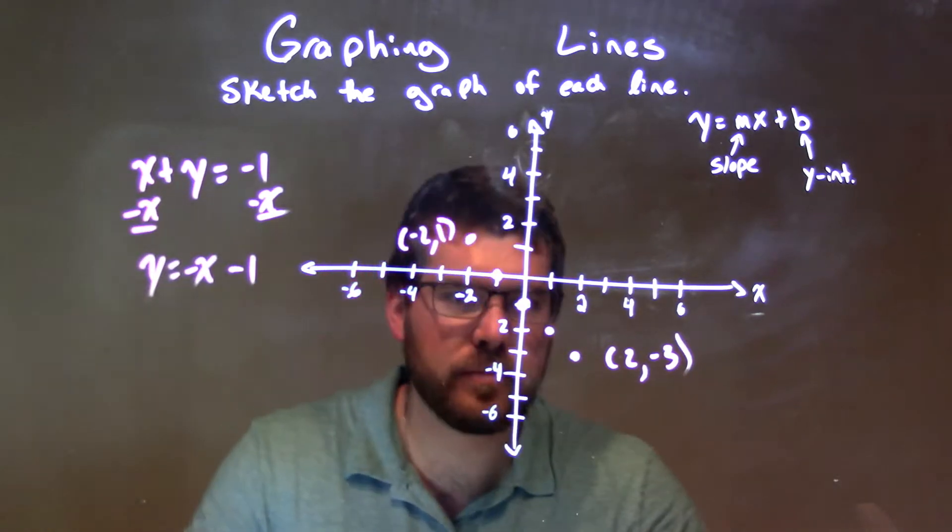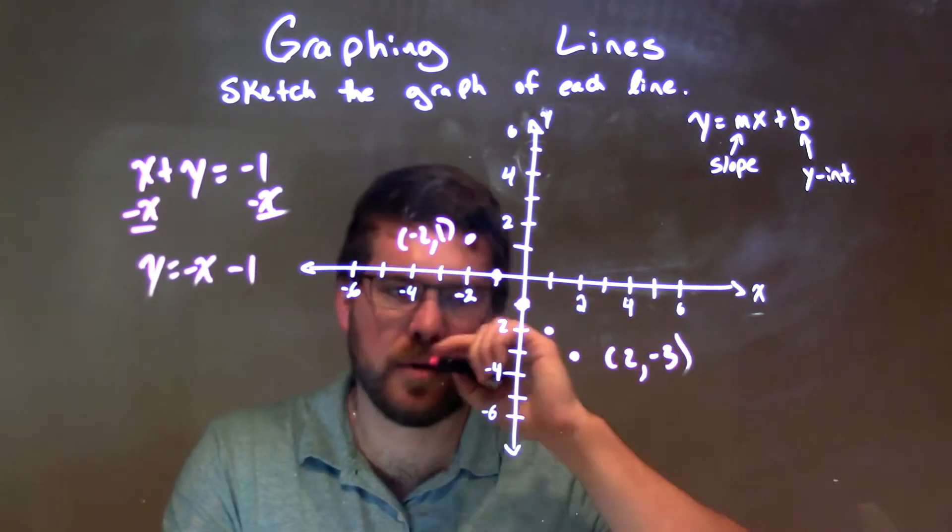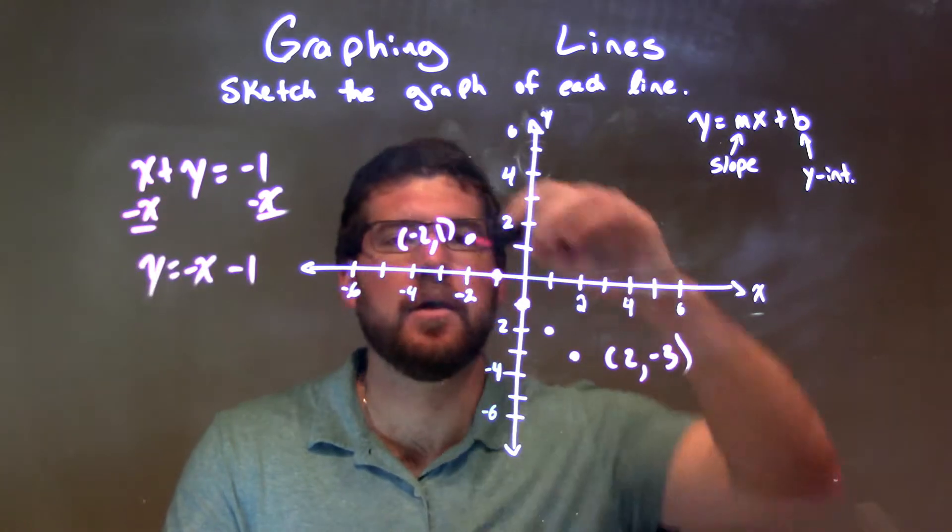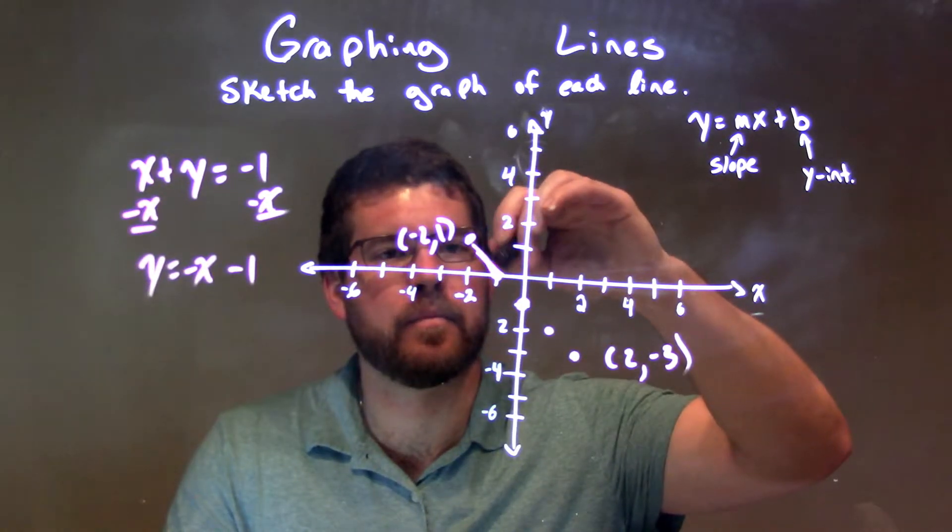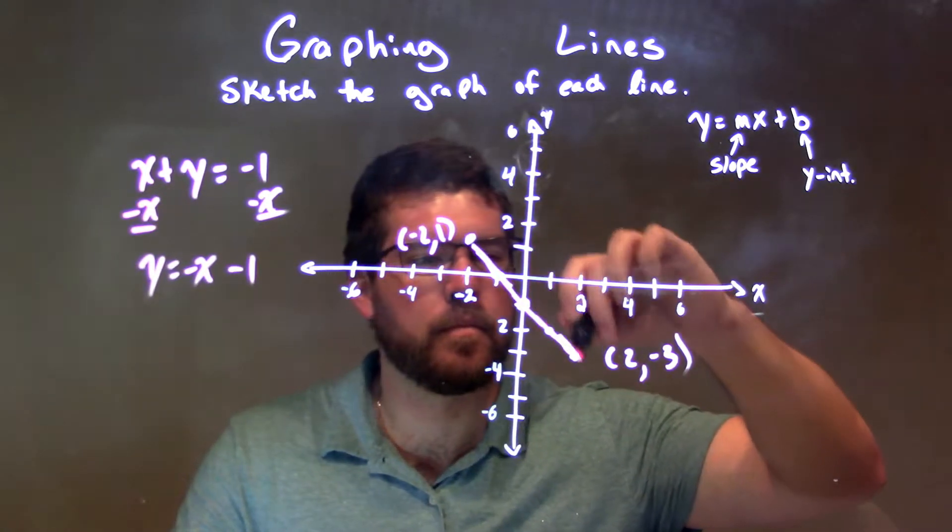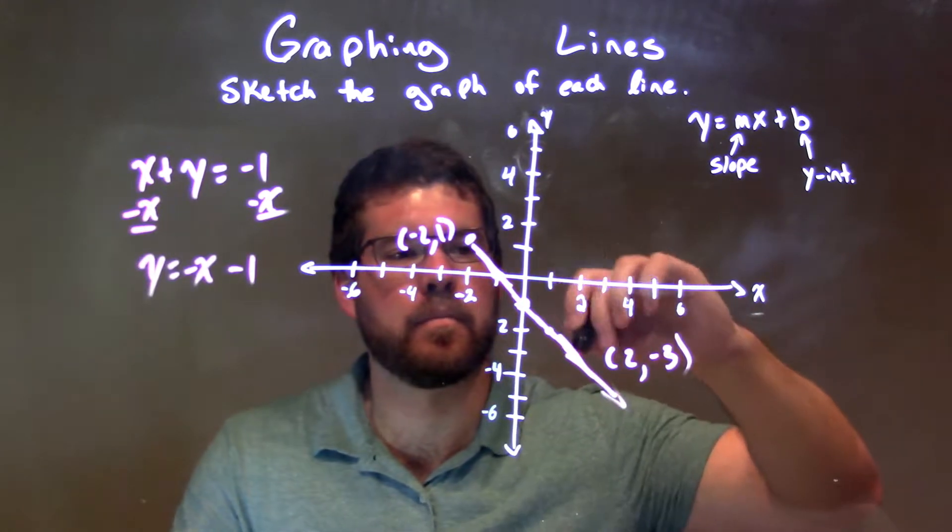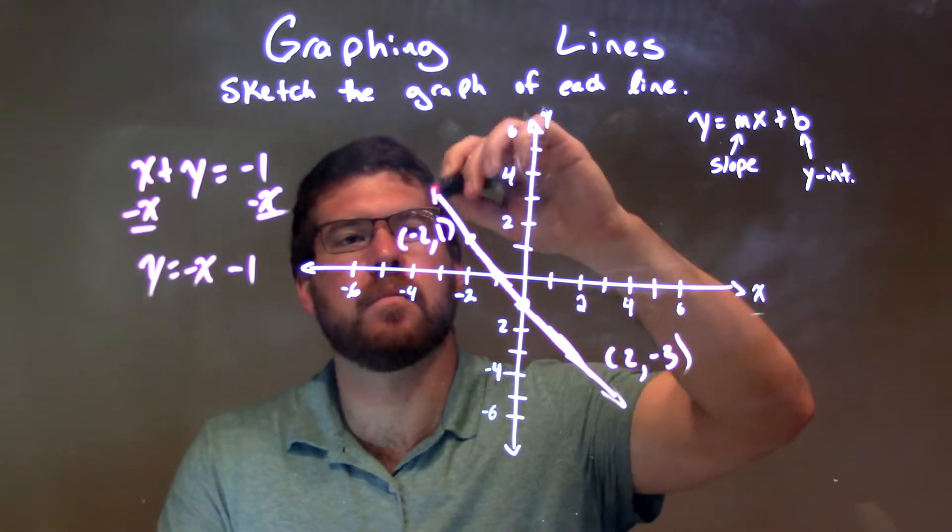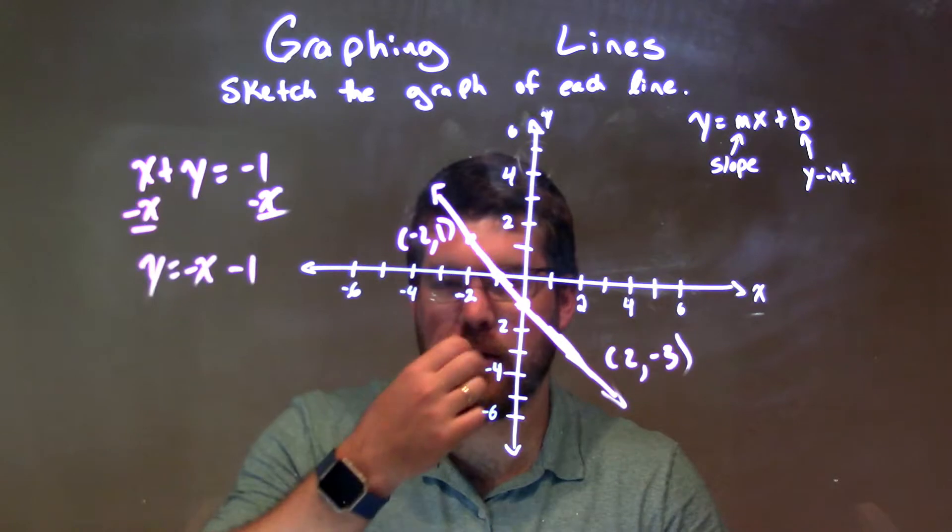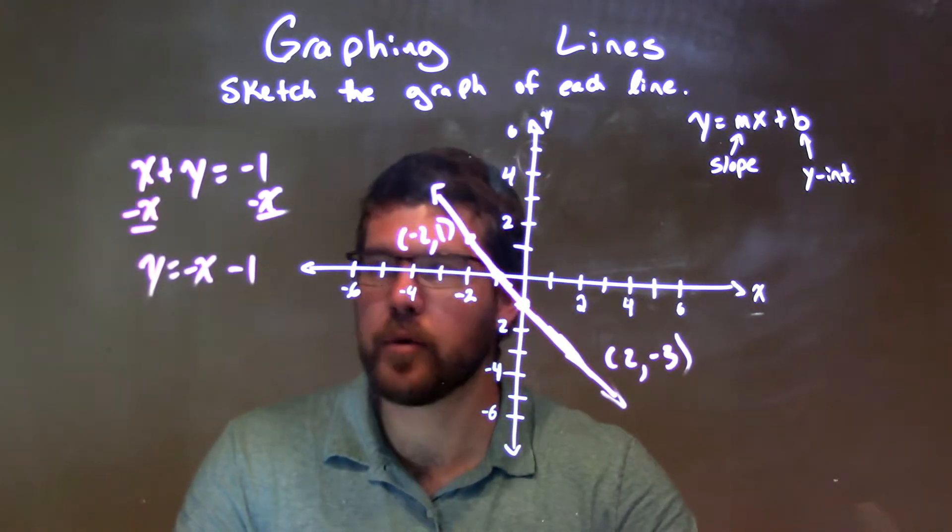So, these are some of the points, and we keep on going further. There's infinitely many points, but we connect these dots. And there we have our graph, all right?